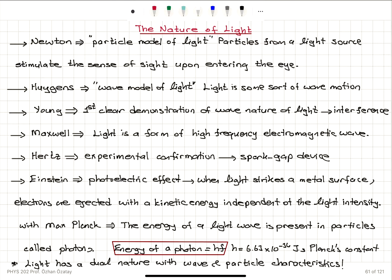Hertz provides a clear experimental confirmation. The frequency of electromagnetic waves is demonstrated using the spark gap device. An LC circuit creates sparks, and those sparks can be detected by another LC circuit which has a variable gap. That was Hertz's experimental confirmation.